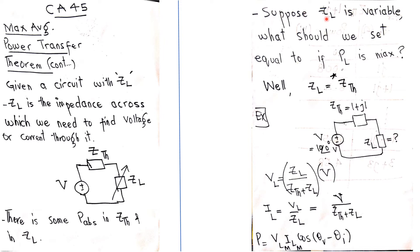Suppose ZL is variable — what should we set it equal to if PL is maximum? In the last lecture we studied that ZL should be set equal to the complex conjugate of Z_thevenin. But in this lecture we are going to verify it using a trial method — we will try different values of ZL to find for which value the power dissipated is maximum.